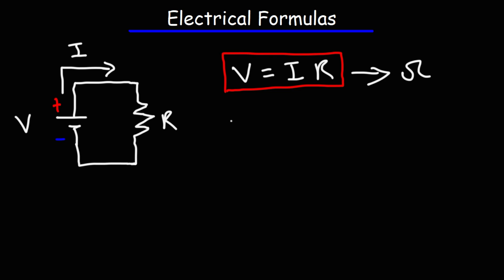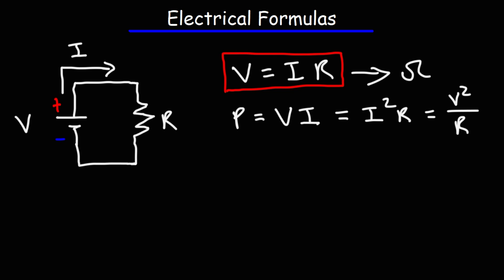The next equation you need to be familiar with is power. The power dissipated by a resistor is equal to the voltage across that resistor multiplied by the current flowing through the resistor. You can also use I squared R, and also V squared over R. So that's how you can calculate the power dissipated by a resistor or the power delivered by a battery — you can use any one of those formulas.